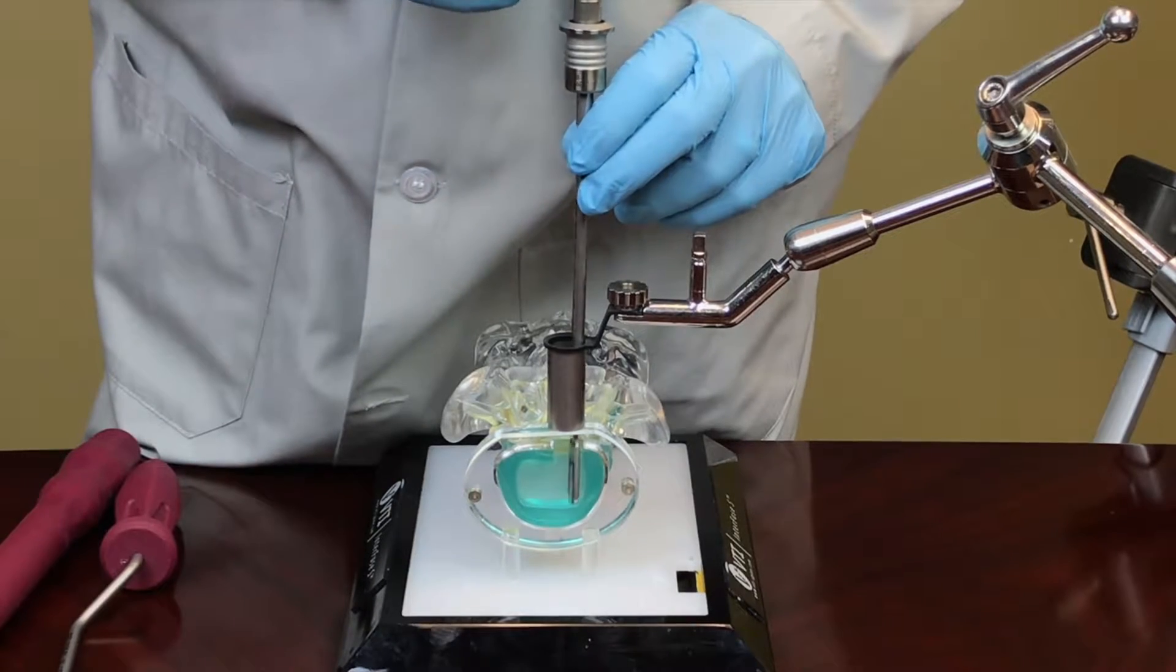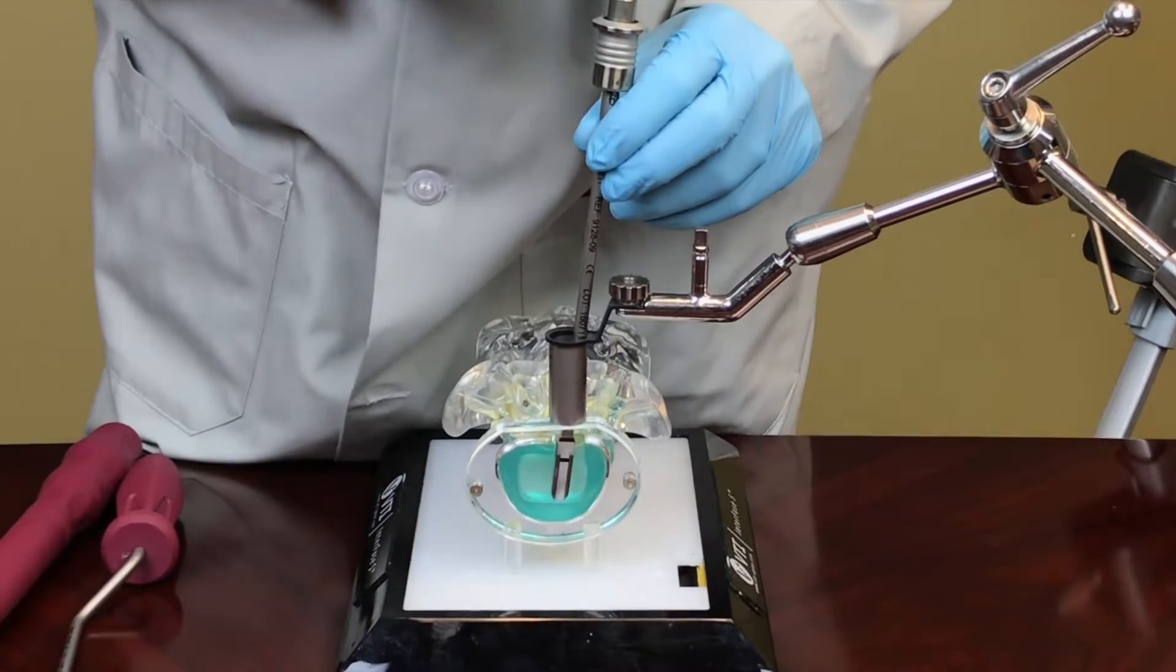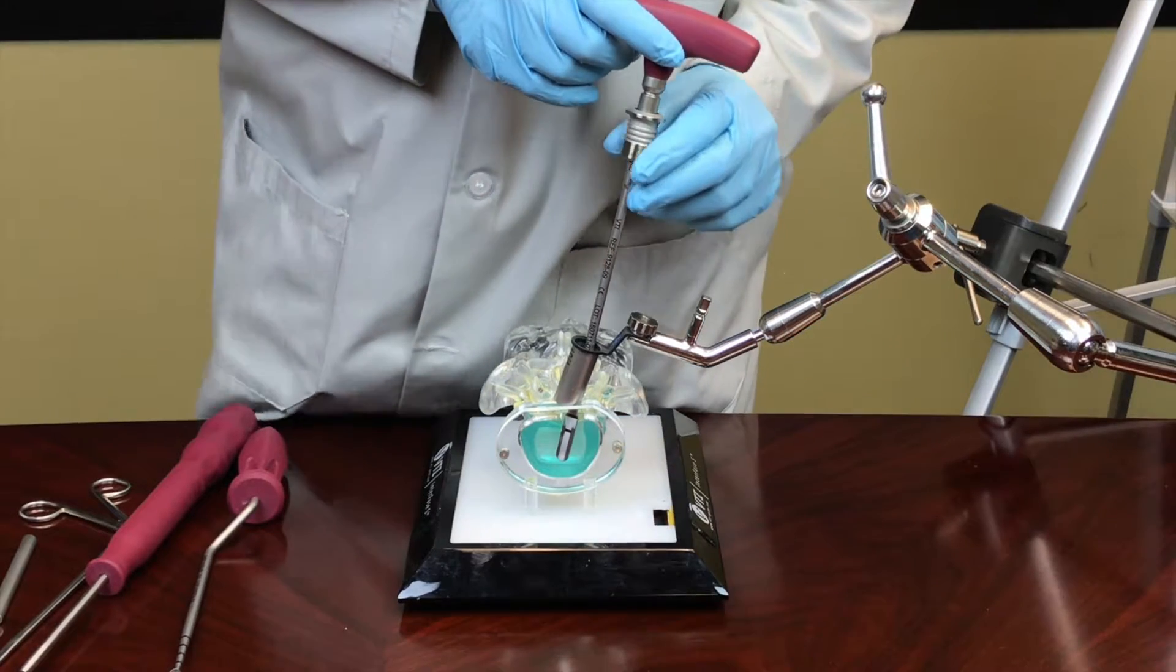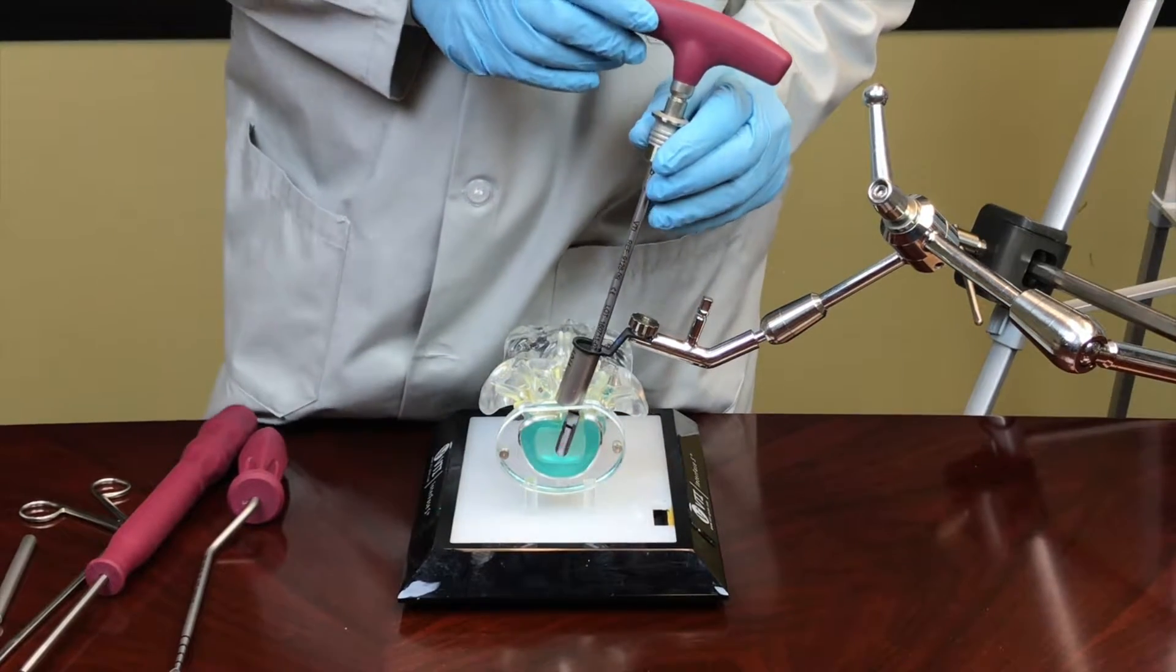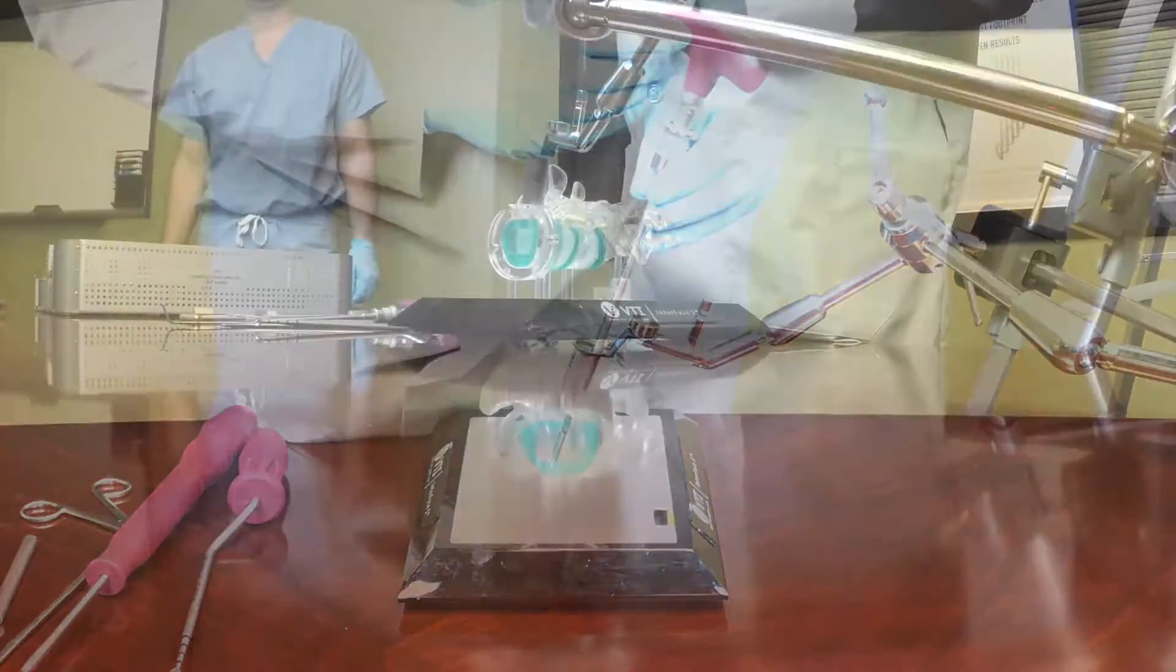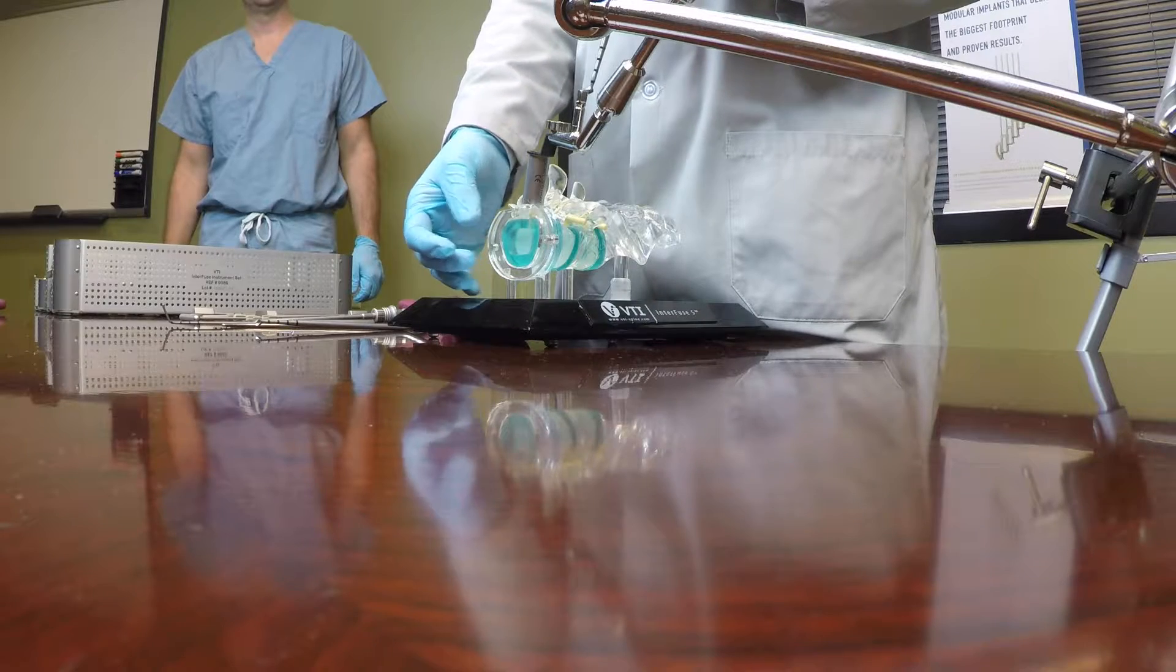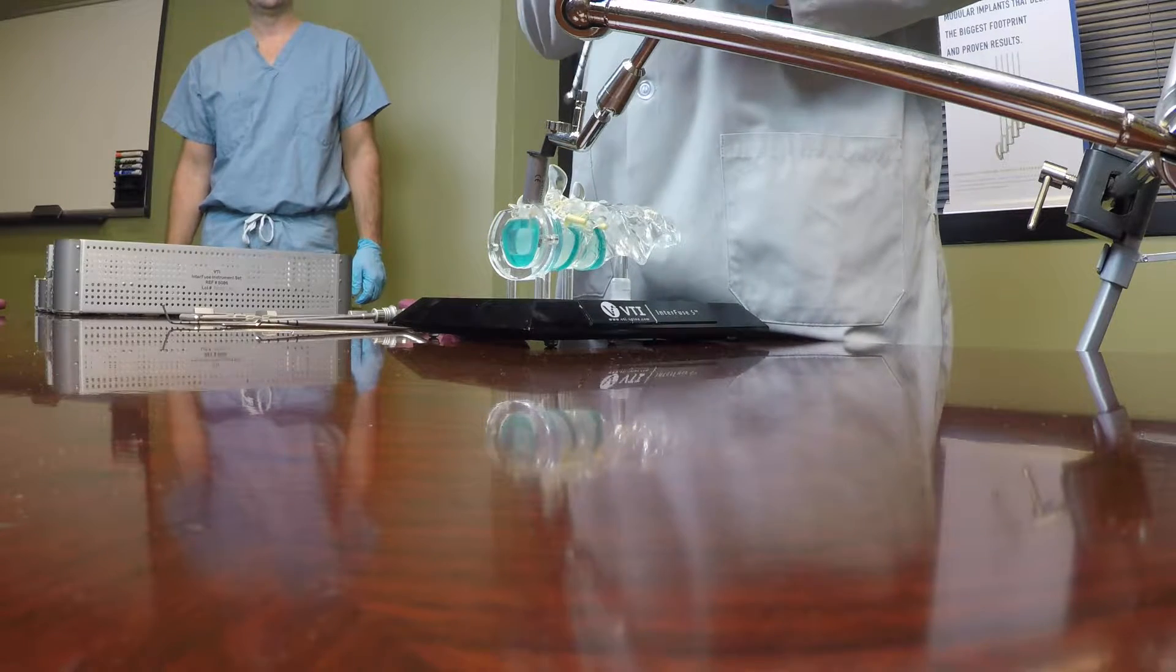We're planning for just a unilateral approach through the tube, so we also need to get the contralateral side. Here I've angled the tube to the contralateral side, which allows me to reach my shaver. We're going to fill this entire disc space with an implant. So reaching this contralateral side with your discectomy is very important.